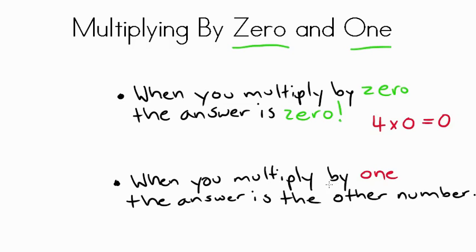And when you multiply by 1, the answer is always the other number. For instance, if you multiplied 4 times 1, the answer is 4, the number that you multiplied by the number 1.